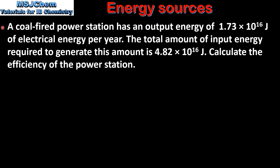Let's look at an example. A coal-fired power station has an energy output of 1.73 × 10¹⁶ joules of electrical energy per year. The total amount of input energy required to generate this amount is 4.82 × 10¹⁶ joules.